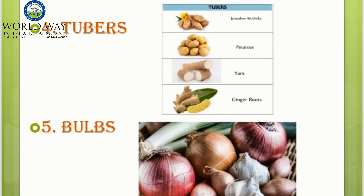There are also tubers — examples are potato, yam, and ginger. Some vegetables are the bulbs of the plant; for example, different types of onions — small onion, big onion, and garlic — all come under the bulbs of the plant.